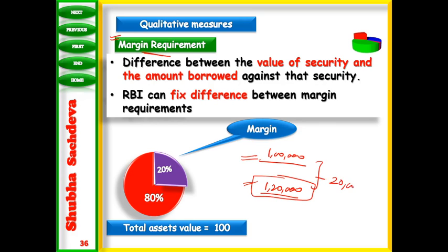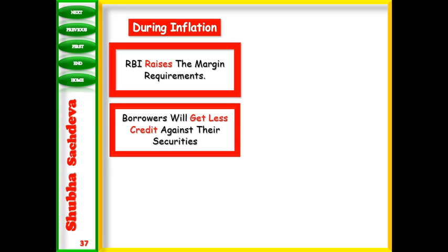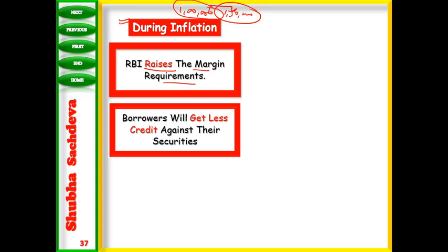This margin — say 20,000 — is fixed by the RBI. It can be increased at the time of inflation and decreased at the time of deflation. RBI raises the margin requirement during inflation. Because of this raise in margin requirements, people would not want to borrow more. If they want a loan of one lakh and RBI has raised the requirement to one lakh fifty thousand, only those who truly need the loan will take it.